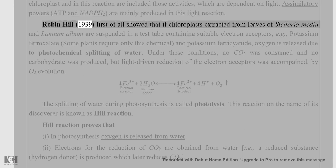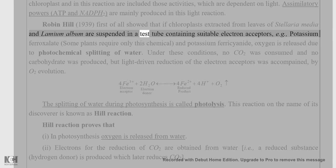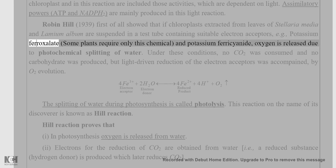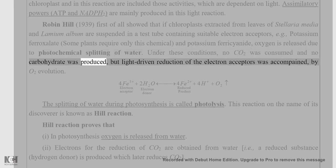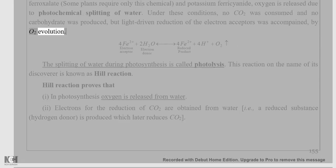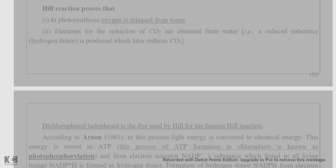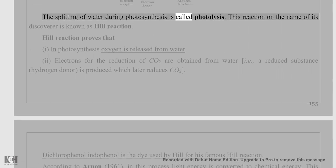Robin Hill (1939) first showed that if chloroplasts extracted from leaves of Stellaria media and Lamium album are suspended in a test tube containing suitable electron acceptors — e.g., potassium ferroxylate or potassium ferricyanide — oxygen is released due to photochemical splitting of water. Under these conditions, no CO2 was consumed and no carbohydrate was produced, but light-driven reduction of the electron acceptors was accompanied by O2 evolution. The splitting of water during photosynthesis is called photolysis.